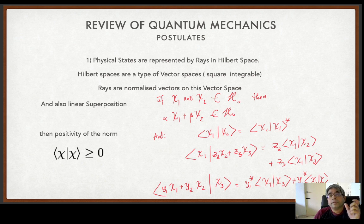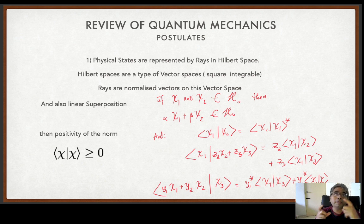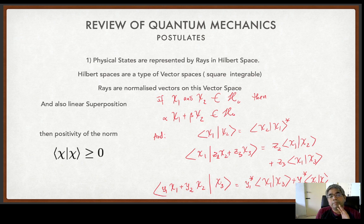Rays don't form vector spaces on their own because they are normalized — all of them are of unit length. So you cannot use properties like superposition to form another ray, since all rays have the same length. It is actually complex linear vectors which form vector spaces. Because physical particles lie on the normalized vectors, that is the reason why we call them rays.